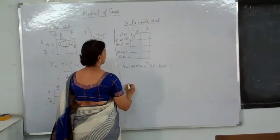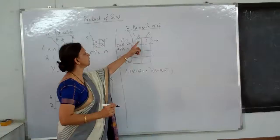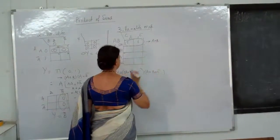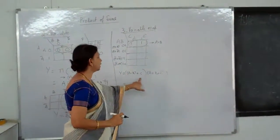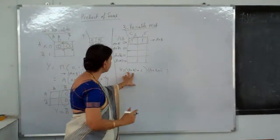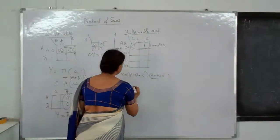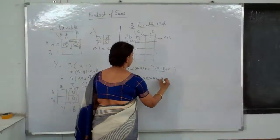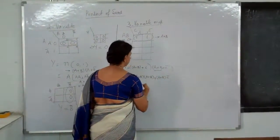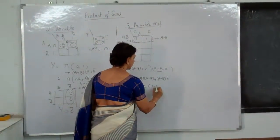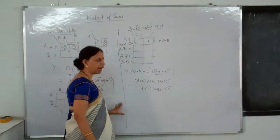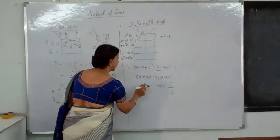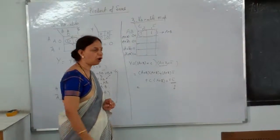What is not changing as you move from here to here? A + B is not changing. So treating A + B as one entity and applying the associative law: it is (A + B + C)·(A + B + C-bar) = (A + B)·[(A + B + C)·(A + B + C-bar)]. Treating A + B as a single variable, C·C-bar = 0.